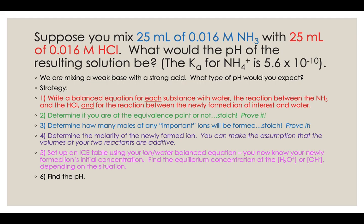We saw in the previous video that when you do a strong acid with a weak base, the strong acid wins. That's a nice easy way to remember it, but it's not the AP explanation. The AP explanation is that the conjugate acid of your weak base reacts with water, producing a secondary reaction where additional hydronium ions are formed, making the pH acidic — less than 7.